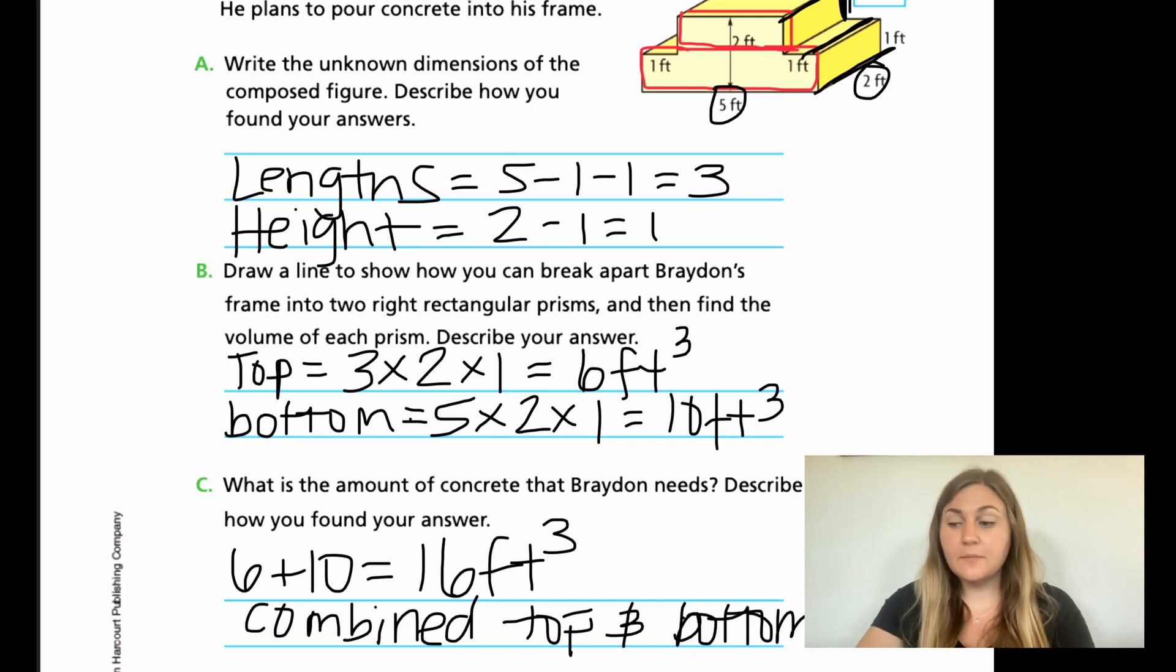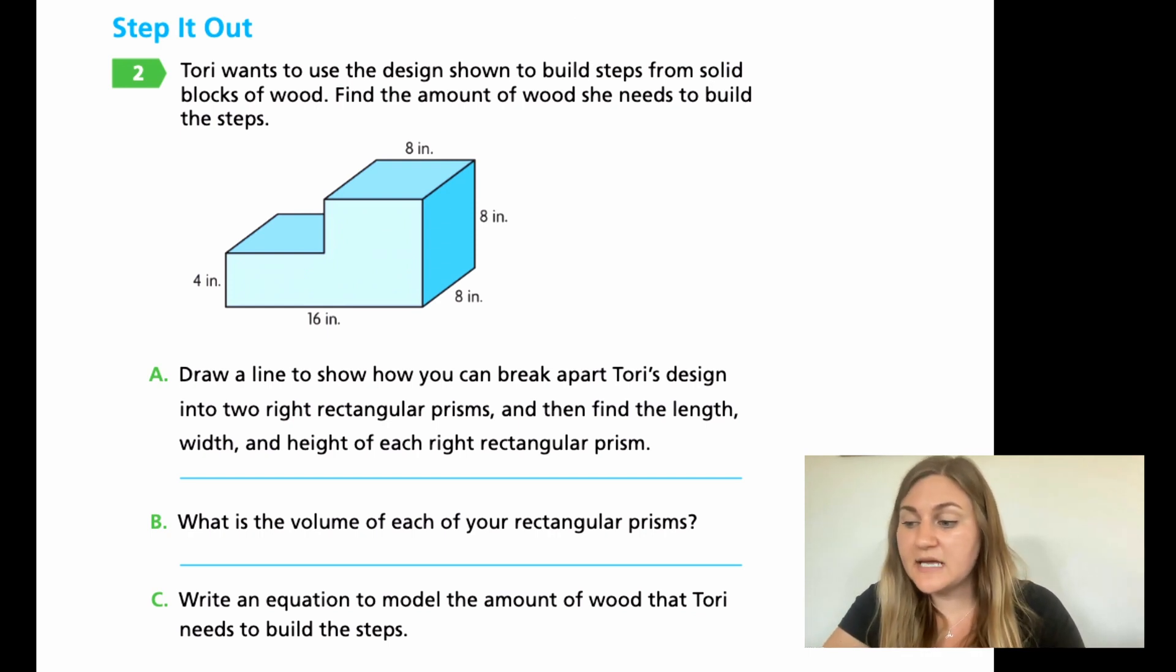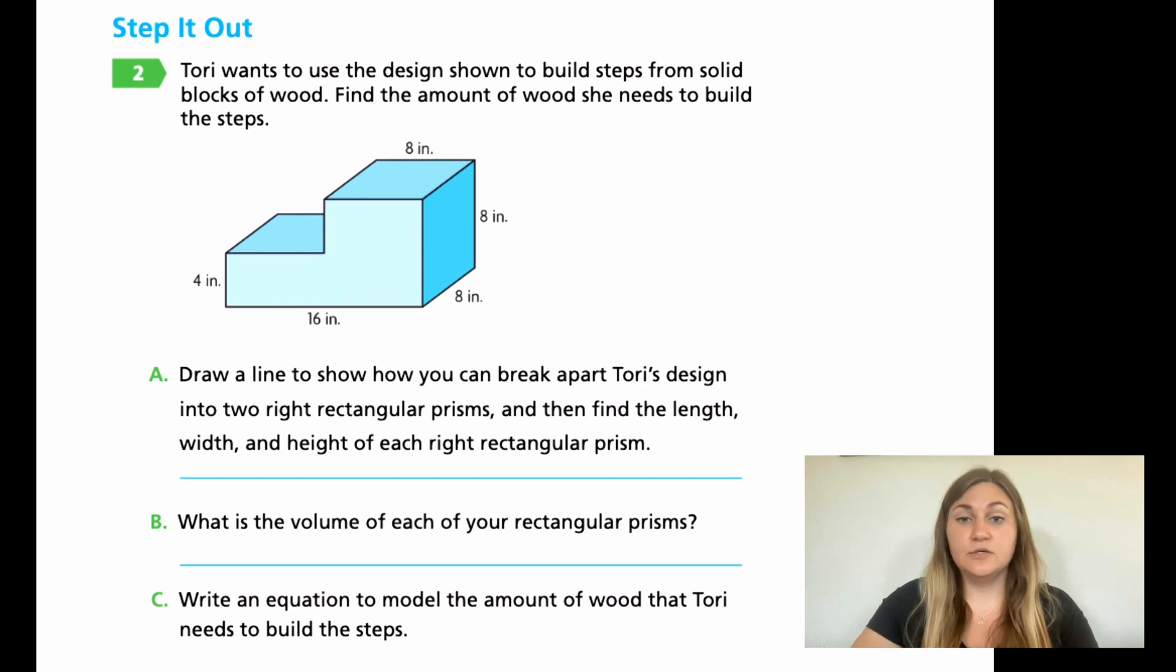Hopefully that was a little quick, but hopefully you were able to follow along so we can put it into practice with our next problem. In problem number two, it says Tori wants to use the design shown to build steps from solid blocks of wood. Find the amount of wood she needs to build the steps. Because this is a very new topic, I'm going to go ahead and just have you do one question at a time and then I'm going to pause. For A, it says draw a line to show you how to break apart Tori's design into two right rectangular prisms and then find the length, the width and the height of each rectangular prism. So you're going to draw your line on your shape so that you can make two different right rectangular prisms. That's the first thing. And the second thing, don't find the volume. You're just finding the length, the width and the height for each box. So just do A and then go ahead and pause here and join me back so we can solve.